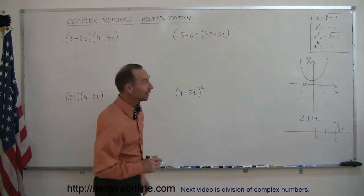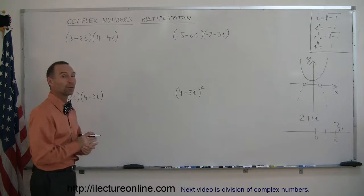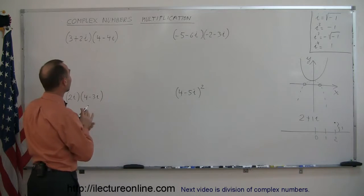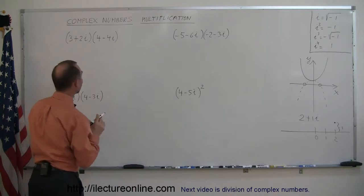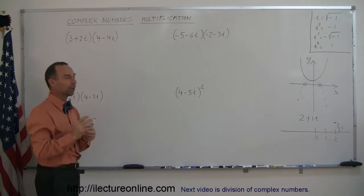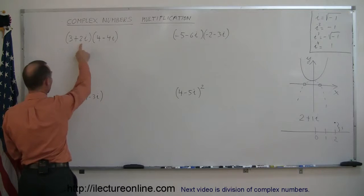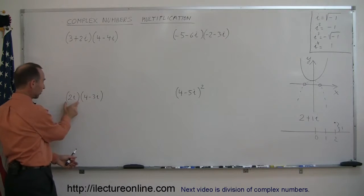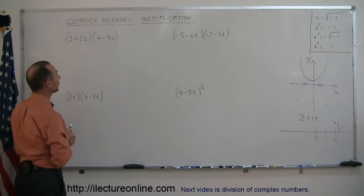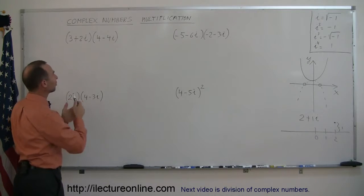Welcome to iLecture Online. In the next segment, dealing with complex numbers, we're going to learn how to multiply them. Here are four examples, four multiplications. Remember that every complex number doesn't have to have both a real part and imaginary part, but typically they do. Here's an example where the complex number only has the imaginary part, not the real part — but it doesn't matter. We need to know how to multiply any combination of them.